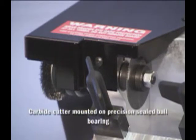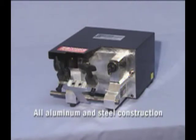The carbide cutter is mounted on a pair of precision sealed ball bearings. They require no care whatsoever and assure long life. All aluminum and steel construction guarantee a machine that will last a lifetime and hold its accuracy even through the toughest of conditions.